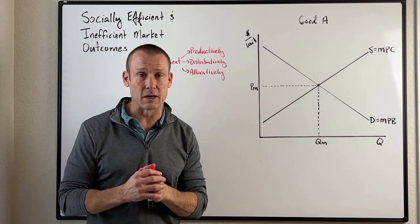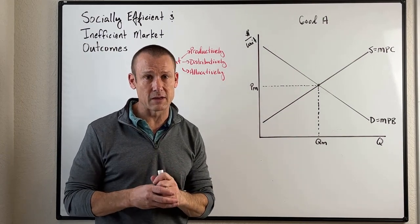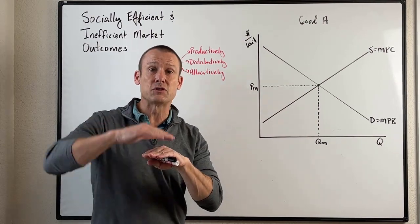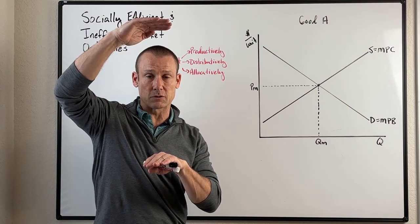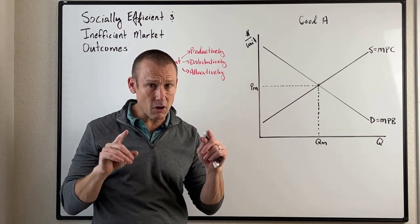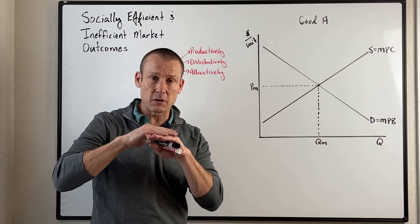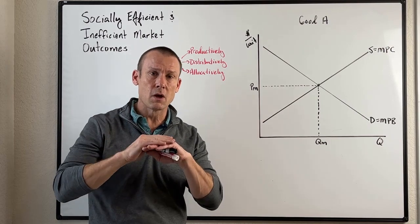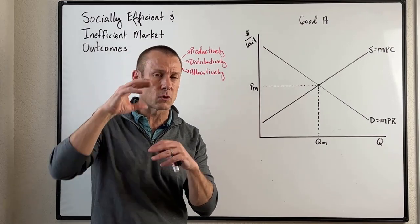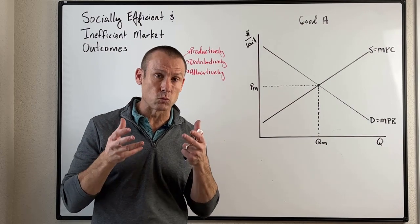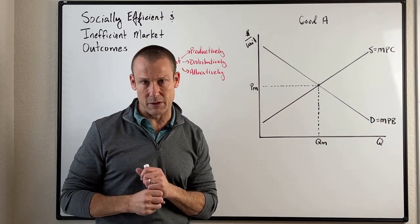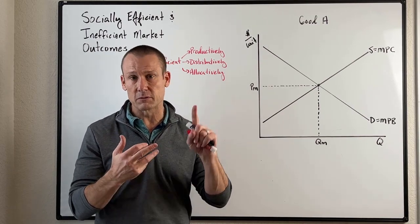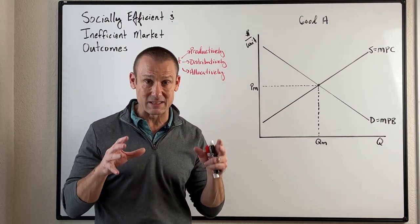Oftentimes, markets do not achieve maximum social surplus. It has to be a pretty stylized world for a market left completely alone to achieve that. Most markets are going to fall somewhat short. If they fall only a little bit short, we might still want to leave them alone. Others might fall quite a bit short, and then we ask: can the government intervene? There are many ways to intervene — per-unit taxes, subsidies, price ceilings, price floors, and similar tools.